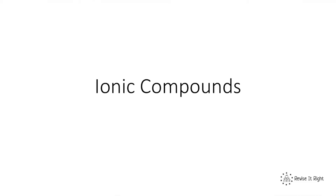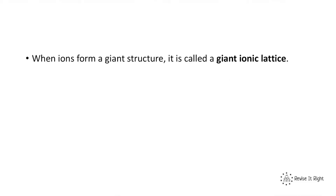This video is about ionic compounds. When we do a chemical reaction, we don't just use one or two atoms like we looked at when drawing ionic bonding in a previous video. What we actually use is billions and billions of different atoms. When billions of positively and negatively charged ions join together, it forms a rather giant structure.